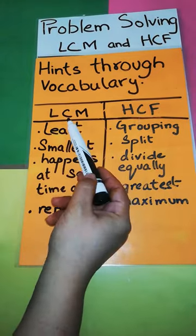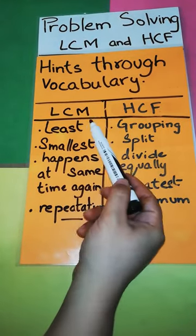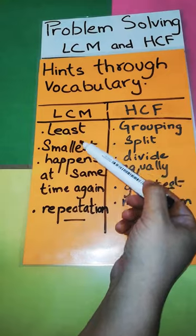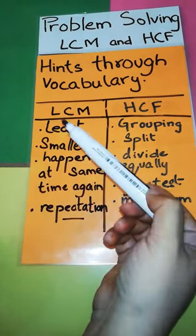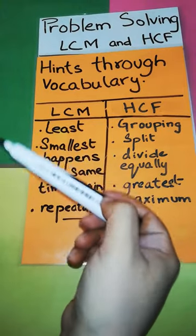Now we have the LCM and HCF vocabulary here. In LCM, you will be finding words like least or smallest, or you can also find a pattern, a cycle of repetition of events.